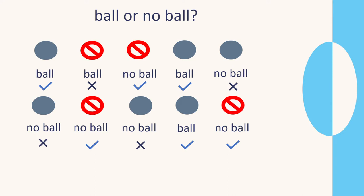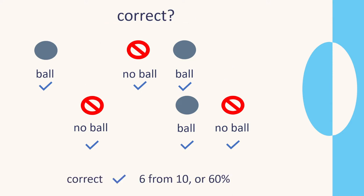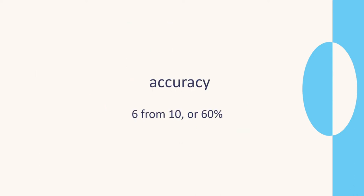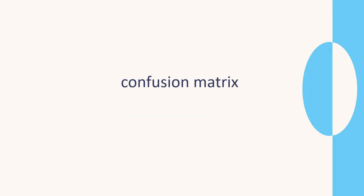How did we do? We got six from ten, so that's 60%, which isn't too bad. We can say our accuracy was six from ten, or 60%. Now let's look at the confusion matrix.